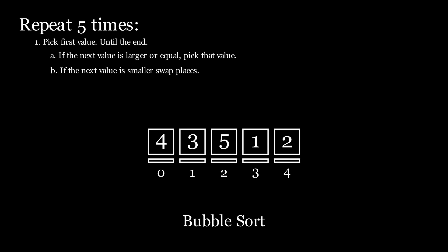Let's perform the first rule and pick our first number, 4. We then perform the following two rules until we reach the end. We apply rule B because the next value, 3, is smaller than 4. So, 3 and 4 swap places.